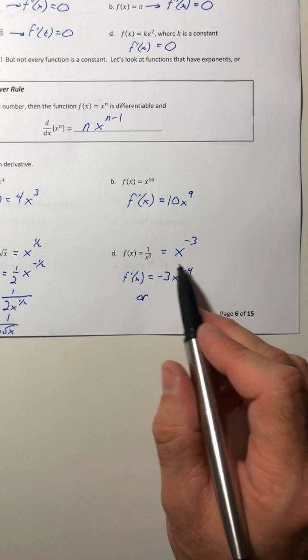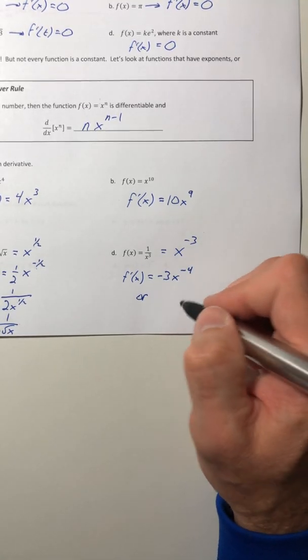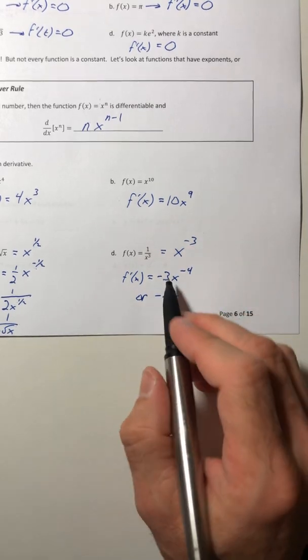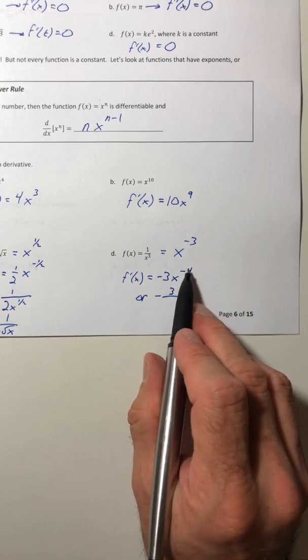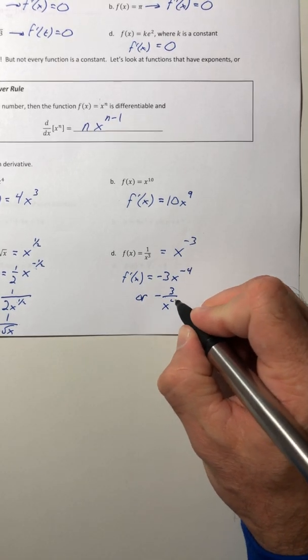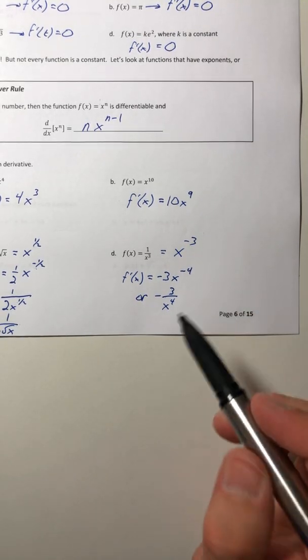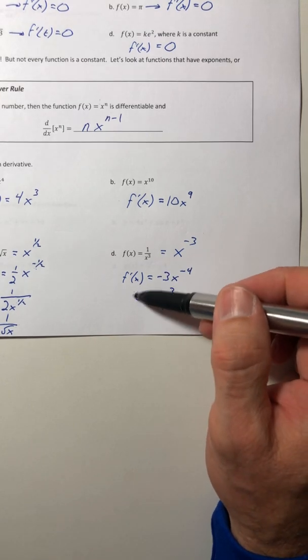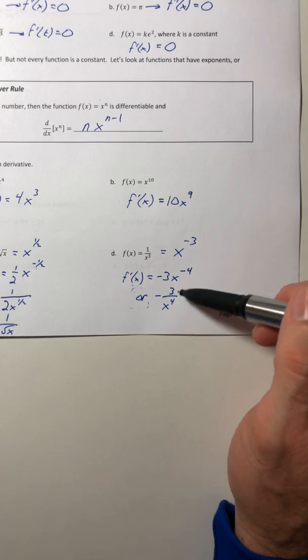And again, you can rewrite this in another way. You can flip the x to the negative four. You can put it down underneath. Just don't take the three, because the three is not affected by the exponent. Just the x is. So, negative three over x to the fourth. And again, people could just go, well, which one do I put? Well, that's what the word or means. You can put either one. Just pick your favorite.